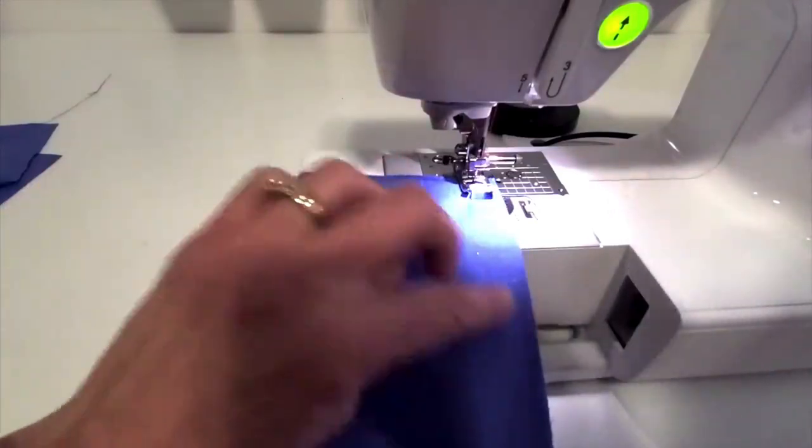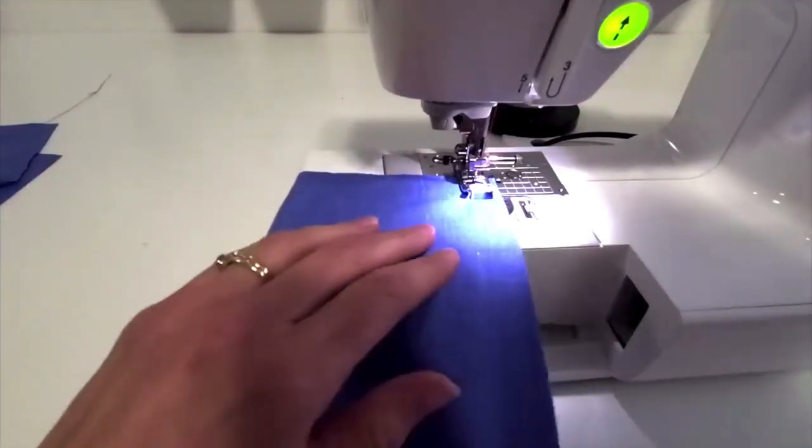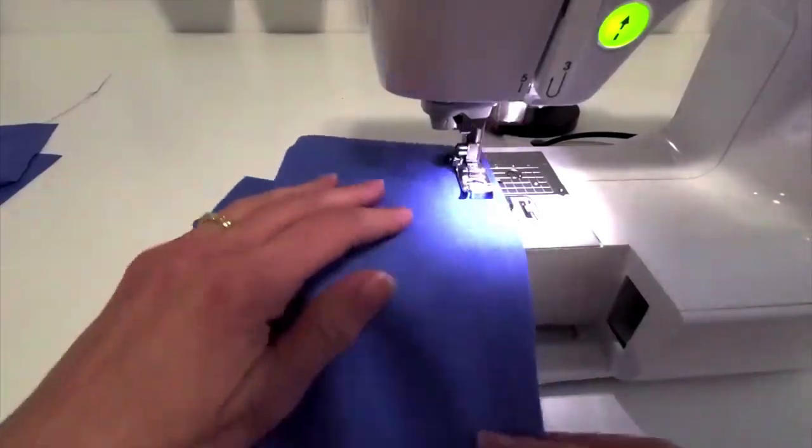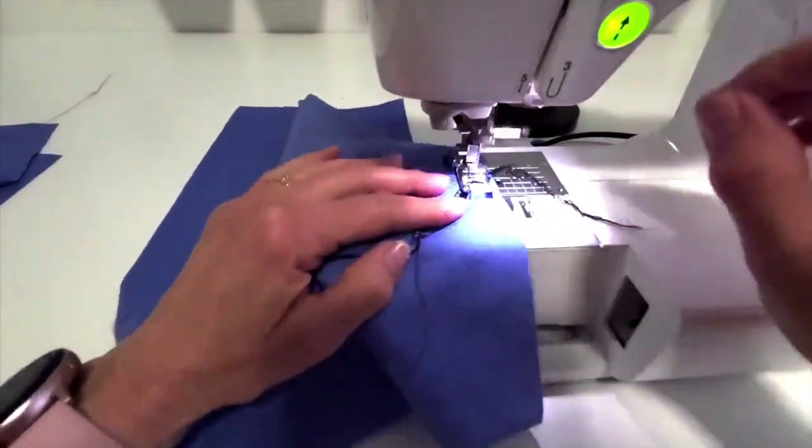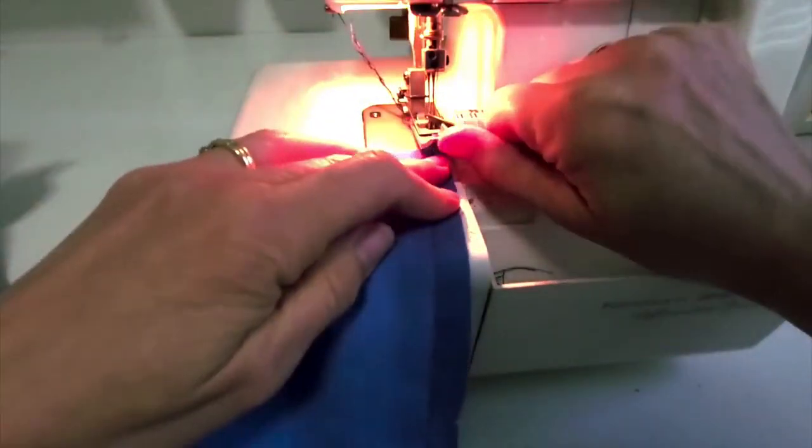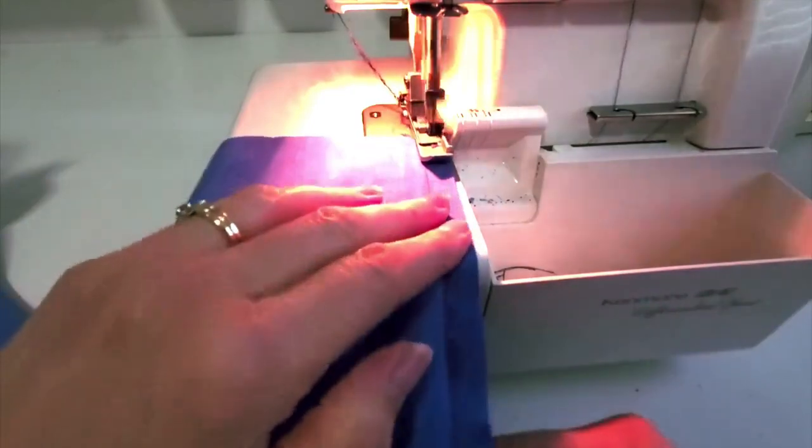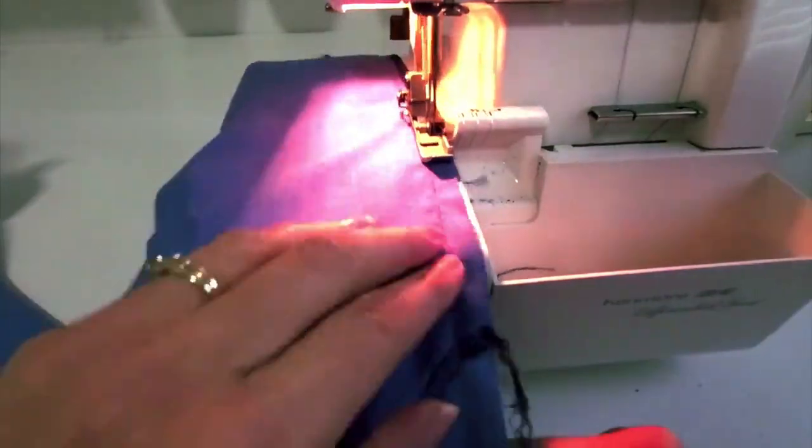Start with a back tack, match up your edges and your notches. Once we're done sewing this, we'll go straight to the serger. For the back I'm going to start right at the top and serge the whole way down.